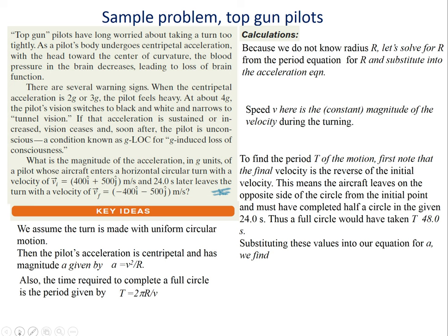We have a simple problem. Top gun pilots have long worried about taking a turn too tightly — as a pilot's body undergoes centripetal acceleration towards the center with the head toward the center of curvature, the blood pressure in the brain decreases, leading to a loss of brain function. When centripetal acceleration is 2 or 3 G, the pilot feels heavy. At about 4 G, the pilot's vision switches to black and white and narrows to tunnel vision. If sustained or increased, vision ceases and the pilot goes unconscious — a condition known as G-LOC, or G-induced loss of consciousness. The question asks for the magnitude of the acceleration in G units — essentially how many Gs — remembering that G is 9.8 m/s².